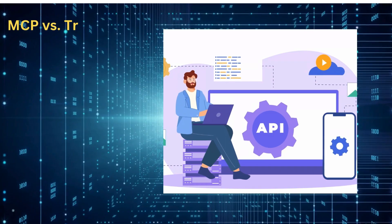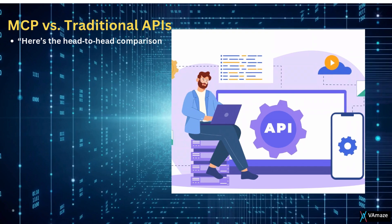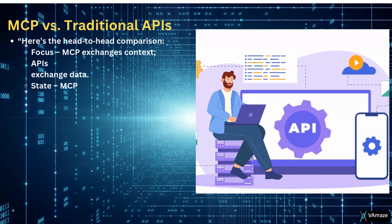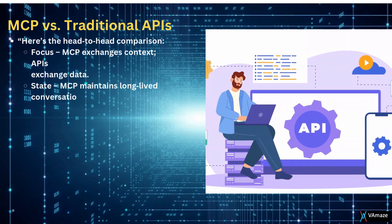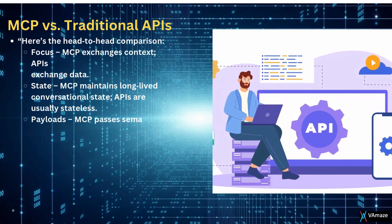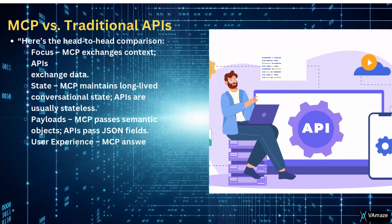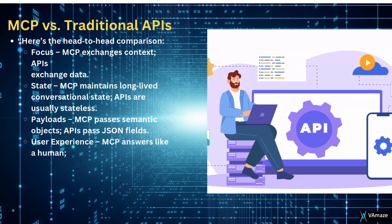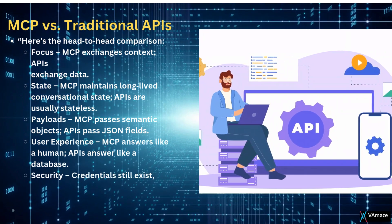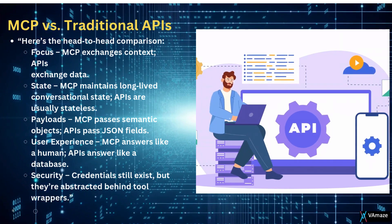MCP versus traditional APIs — here's the head-to-head comparison. Focus: MCP exchanges context; APIs exchange data. State: MCP maintains long-lived conversational state; APIs are usually stateless payloads. MCP passes semantic objects; APIs pass JSON fields. User experience: MCP answers like a human; APIs answer like a database. Security: credentials still exist, but they're abstracted behind tool wrappers.